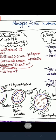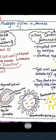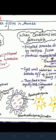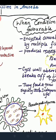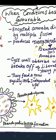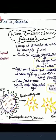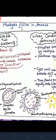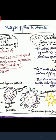Then amoeba undergoes multiple fission, which forms pseudospores inside the cyst. When conditions turn favorable, the cyst breaks and releases the pseudospores. The main difference is that in encystation, a chitin cyst — a three-layered protective layer — forms around the amoeba, but in sporulation this does not happen.